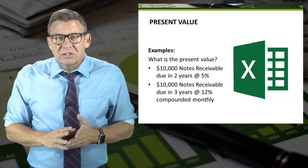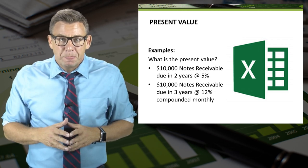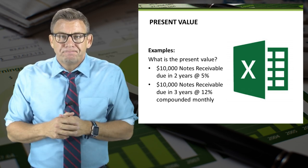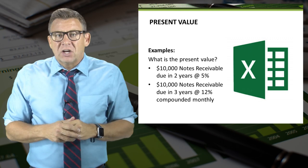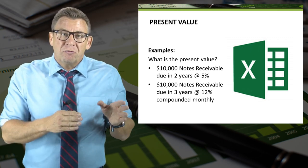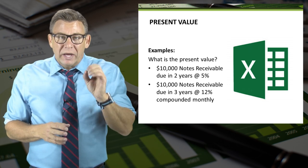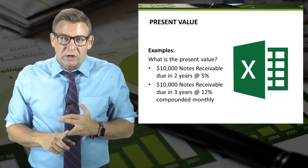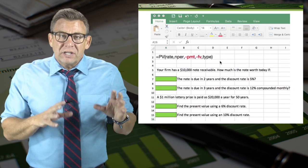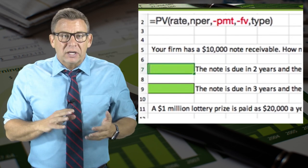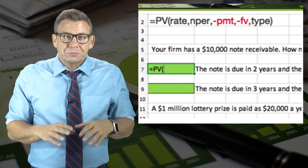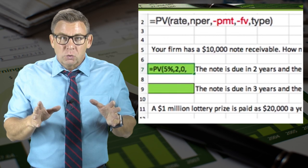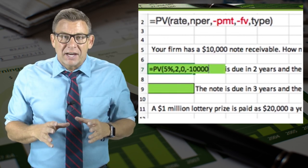For example, a $10,000 notes receivable due in two years at 5% — we know the future value is $10,000. Let's see what it's worth in today's dollars. And a $10,000 notes receivable due in three years at 12% compounded monthly. When we compound something monthly, we divide the interest rate by 12 and multiply the number of periods by 12. Using the present value formula, I enter equals PV, open parentheses, 5%, comma, 2, comma, 0 because there's no regular payment, comma, and minus $10,000.